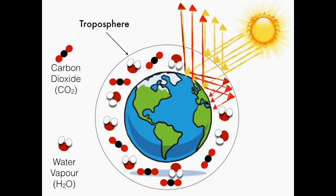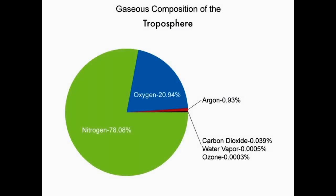Thermal energy is absorbed by atmospheric greenhouse gases such as carbon dioxide and re-radiated in all directions. Our Earth's atmosphere, the troposphere, is composed of a diverse range of gases such as the predominance of nitrogen and oxygen, as well as argon, carbon dioxide, water vapour, and many others. Although carbon dioxide appears to represent a much smaller contribution, it has a massive effect on the Earth's atmosphere and in turn our weather patterns, food security, and general wellbeing.